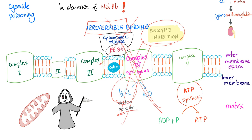Oxygen cannot act as an electron acceptor. Therefore, we will shift to anaerobic glycolysis as a source for energy because ATP from the electron transport chain is no longer viable.